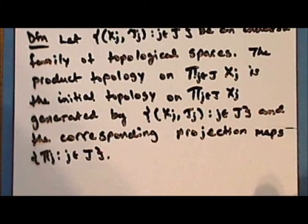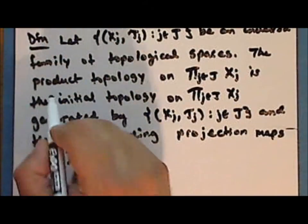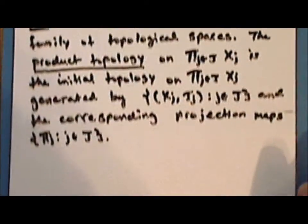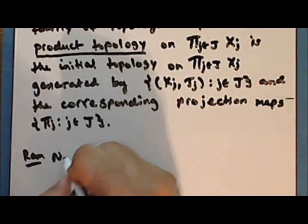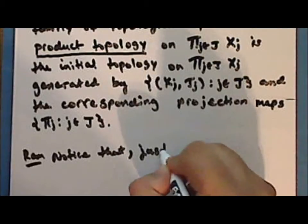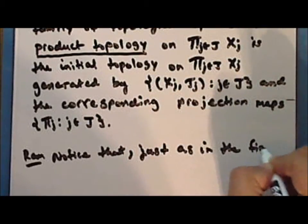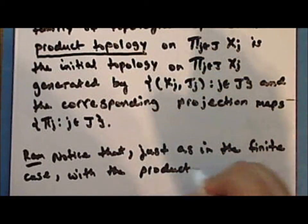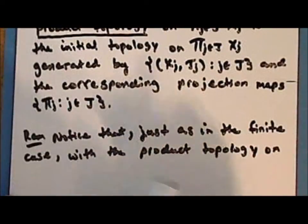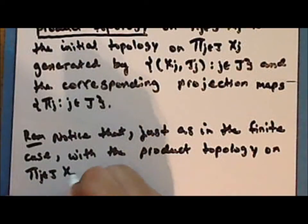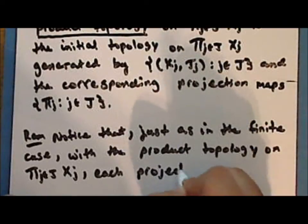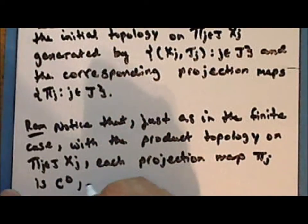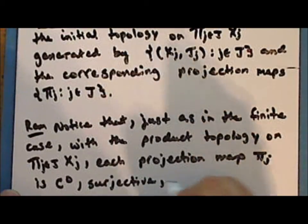Notice that this definition is essentially the same as the definition for the product topology on a finite product set. The only difference is that we have abstracted the definition to cover the case of any arbitrary product set. Notice that just as in the finite case, with the product topology on the arbitrary product set, each projection map is continuous, surjective, and open.